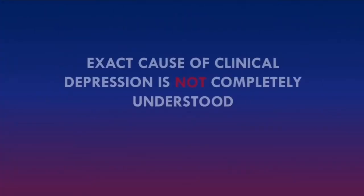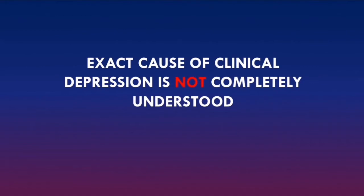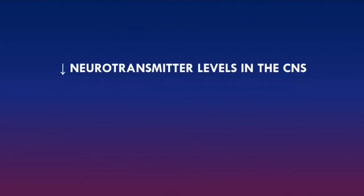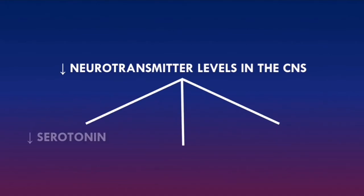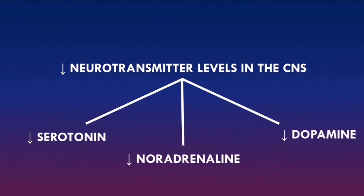It's important to realize that the exact cause of clinical depression is not completely understood. However, there is evidence to suggest that clinical depression occurs due to low levels of neurotransmitters in the central nervous system. This is the monoamine hypothesis, which suggests that clinical depression occurs due to low levels of neurotransmitters, particularly serotonin, noradrenaline, and dopamine. Antidepressants generally work by increasing the availability of these neurotransmitters in the CNS to improve the symptoms of depression.